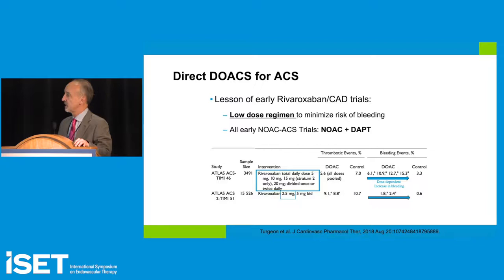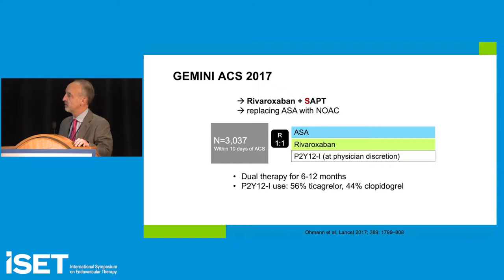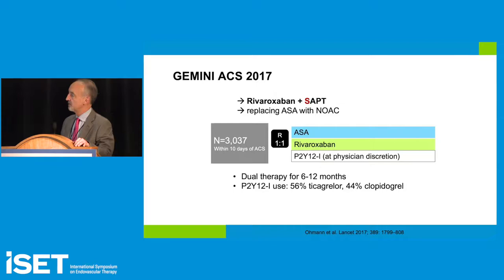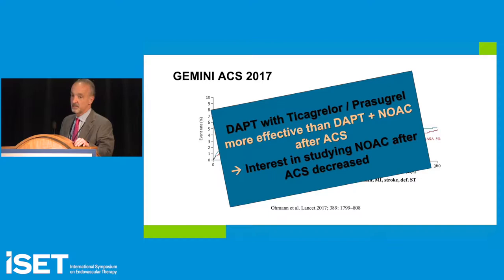The Gemini ACS trial looked at single antiplatelet therapy with rivaroxaban, replacing aspirin with NOACs in the post-intervention setting. There wasn't a big difference between the strategies, and dual antiplatelet therapy with ticagrelor or prasugrel plus aspirin was more effective than DAPT with NOAC after ACS. So interest in NOACs for ACS waned.